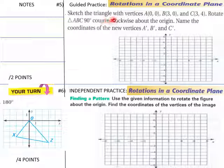Sketch the triangle of vertices here. We're going into our guided practice. 0, 0, 3, 0. Then 3, 4. A, B, C, 90. And rotate triangle A, B, C, 90 degrees counterclockwise. So we're going to be going this way. About the origin. So we're going to measure into the origin. Name the coordinates of the new vertices. A prime, B prime, and C prime. And then find a pattern here. Use the given information to rotate the figure about the origin. Find the coordinates of the vertices of the images.